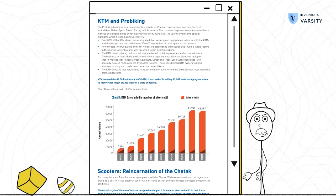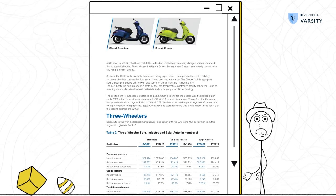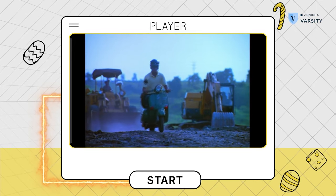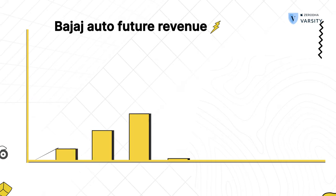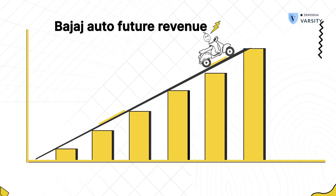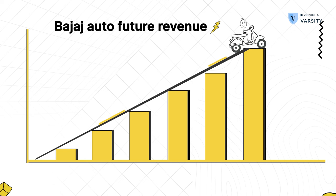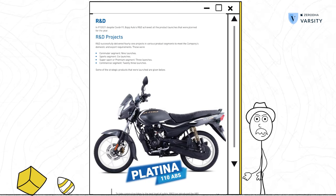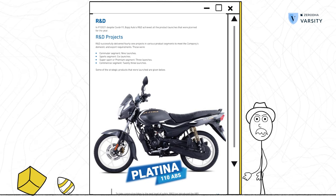It is important to know the segments as it will eventually help us understand which segment drives the revenue of the company. Here's an interesting bit in the annual report: the company talks about the reincarnation of Chetak, a scooter brand we are all familiar with. As a fundamental analyst, you might conclude that future revenue growth may come from Chetak — this is a piece of information that won't be available in the financial statements. Bajaj also discusses the R&D pipeline, from which you can identify potential future growth drivers.